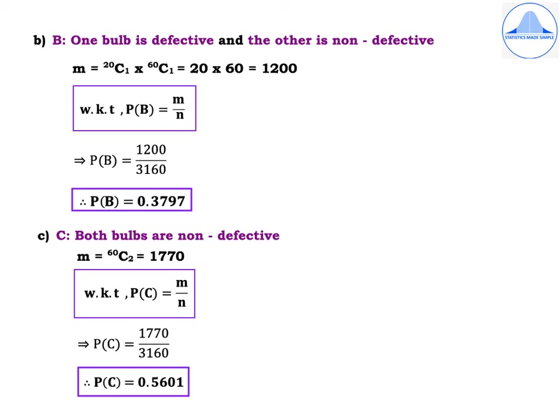Subdivision C, define event C as both bulbs are non-defective. M = 60C2 = 1770. P(C) = M by N = 1770 divided by 3160. Therefore, P(C) = 0.5601.